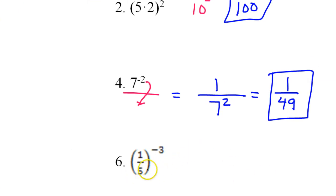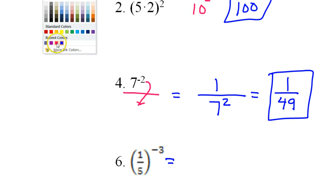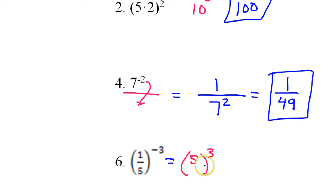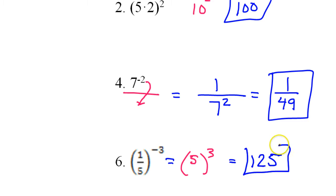When you have a negative power on a fraction, the easiest thing to do is take the reciprocal. The reciprocal of 1/5 would be 5 over 1, and then I make it a positive 3 power. So now I've got 5 to the third power. You should memorize that 5 to the third power is 125. You will be allowed to use a 4-function calculator, so 5 times 5 times 5 you could do that if needed.